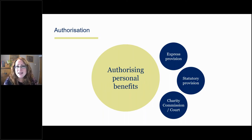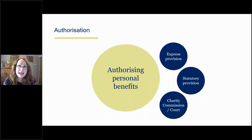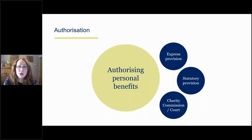Even if you don't have that express power, there is a statutory power in the Charities Act — Section 185 — that allows you to enter into contracts with a trustee or connected person for the supply of services to the charity or goods connected with those services. That statutory power can also be relied on even if your governing document doesn't say anything about it. So that's the second way — there might be a statutory power available to you that allows you to authorise a particular proposed benefit.